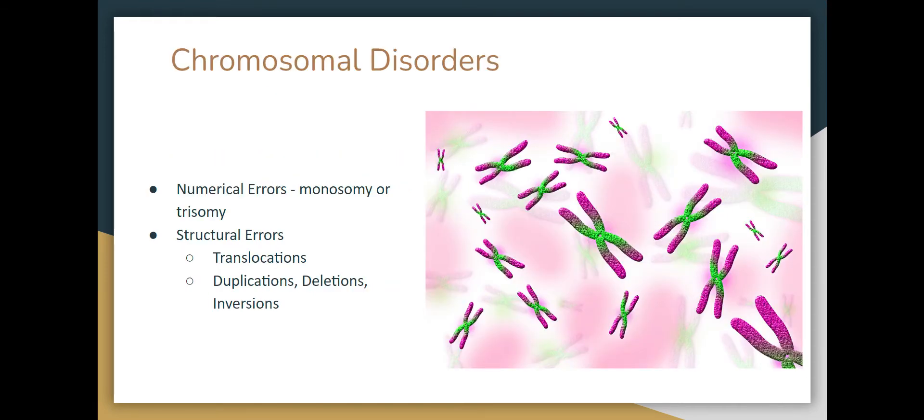Chromosomal disorders come in two basic varieties. There are errors about the number of chromosomes — that's where we have our monosomy, Turner syndrome, trisomies. There are actually tetrasomies and pentasomies that deal with the sex chromosomes. They are rare, but they do happen. And then there are some structural errors. We will talk about translocations in this video.